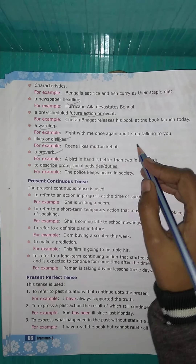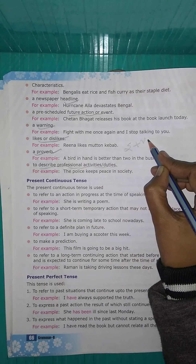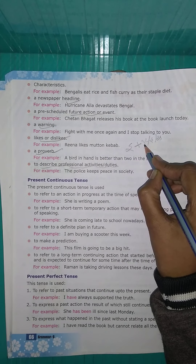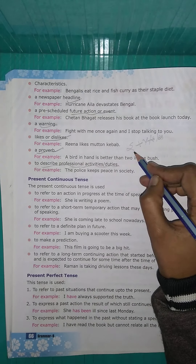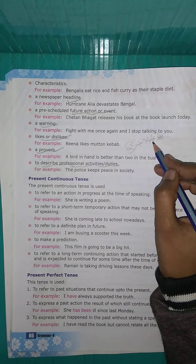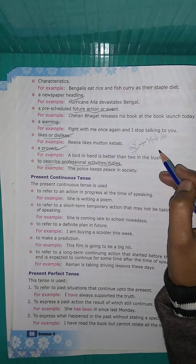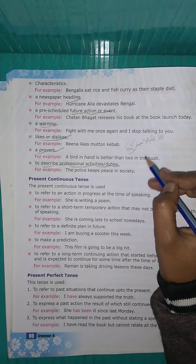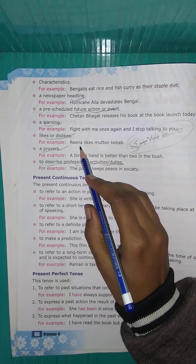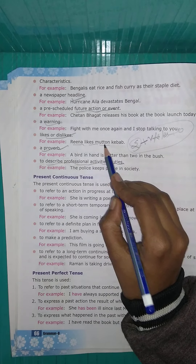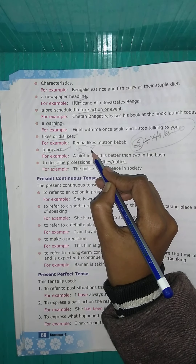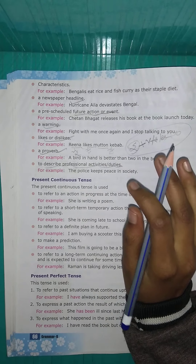In simple present tense sentence formation, the subject is followed by the verb. We add 's' or 'es' to the verb when the subject is singular. When the subject is plural, we use the verb without 's' or 'es'. The structure is: Subject + Verb (s/es) + Object.